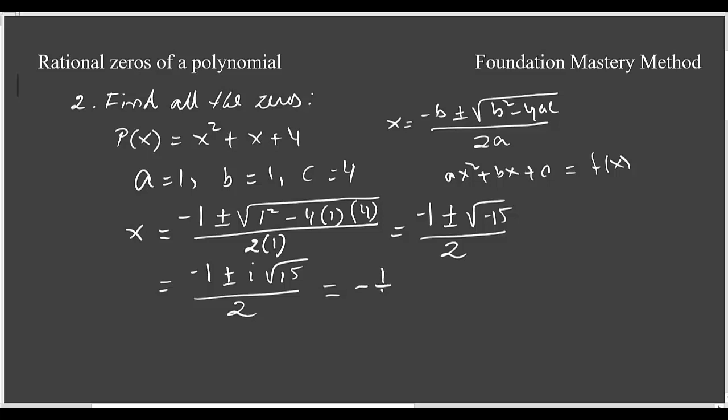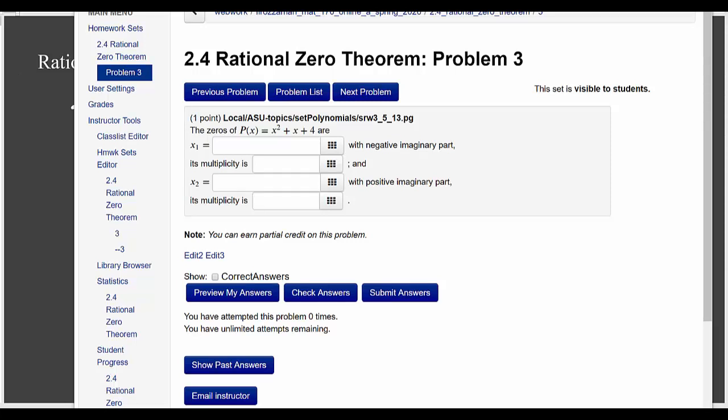You can use your calculator to simplify this one as a decimal or just leave it as it is like -1/2 ± (√15/2)i. So the zeros are x = -1/2 + (√15/2)i and another one is -1/2 - (√15/2)i. So we got our zeros which are all complex numbers. And if you look carefully, this one is the conjugate of that one.